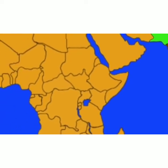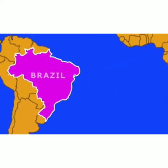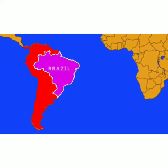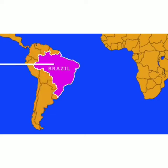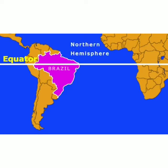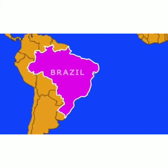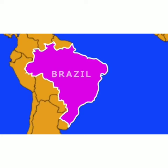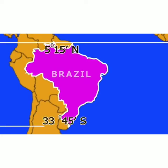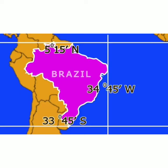On the other hand, let us understand the location, extent and boundaries of Brazil. Brazil lies in the South American continent. Since the equator passes through the northern part of Brazil, some part of Brazil lies in the Northern Hemisphere while most of it lies in the Southern Hemisphere. It also lies in the Western Hemisphere. Brazil lies between 5 degrees 15 minutes north and 33 degrees 45 minutes south latitudes, and between 34 degrees 45 minutes west and 73 degrees 48 minutes west longitudes.